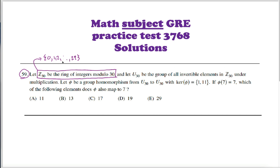It's worth pointing out that in this ring, not all elements have multiplicative inverses. For example, there's nothing you can multiply 0 by to get 1, nor is there anything you multiply 15 by to get 1. Because 15 times any odd number is just 15 mod 30, and 15 times any even number is just 0 mod 30. And it's not just 0 and 15 — any number that's not relatively prime to 30 will lack a multiplicative inverse.